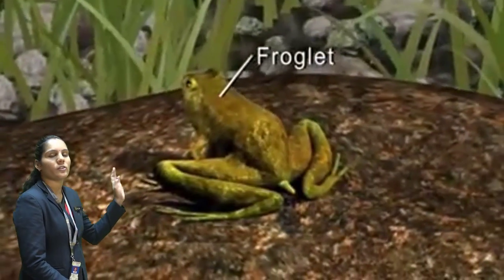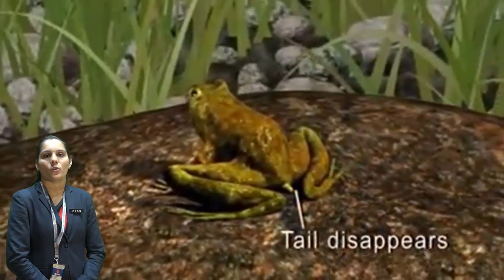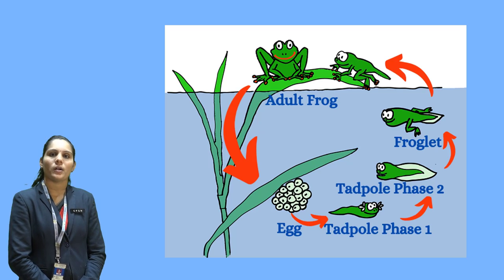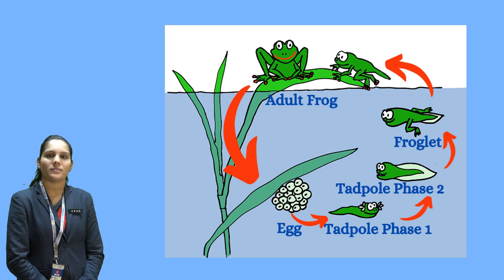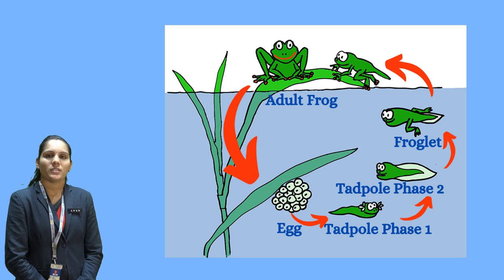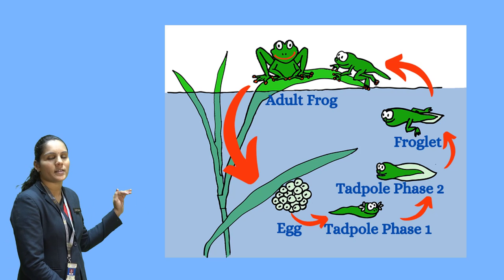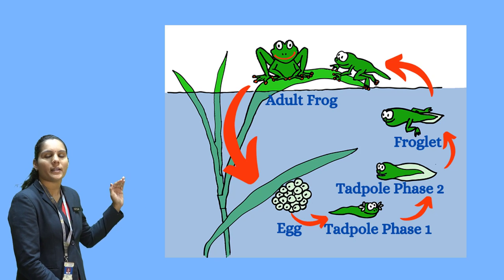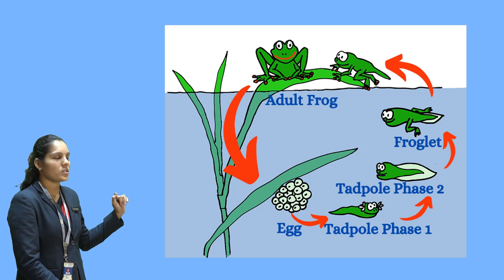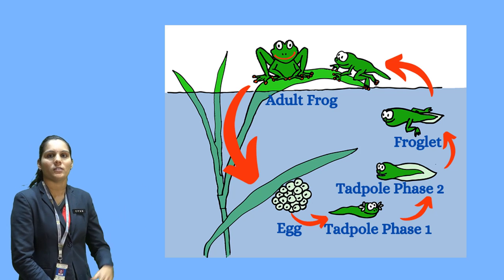This is the whole life cycle of a frog. I hope students, you have understood the life cycle of a frog. The life cycle of the frog contains four main stages: first is the egg, second is the tadpole, then the froglet, and the last one is the adult frog. This is the life cycle we have learned today.